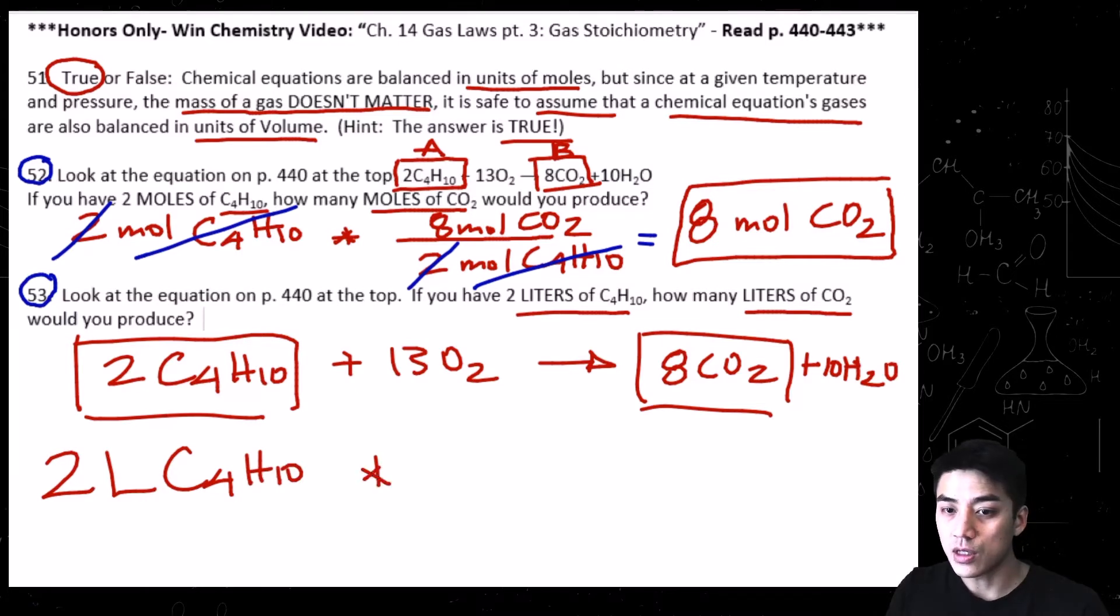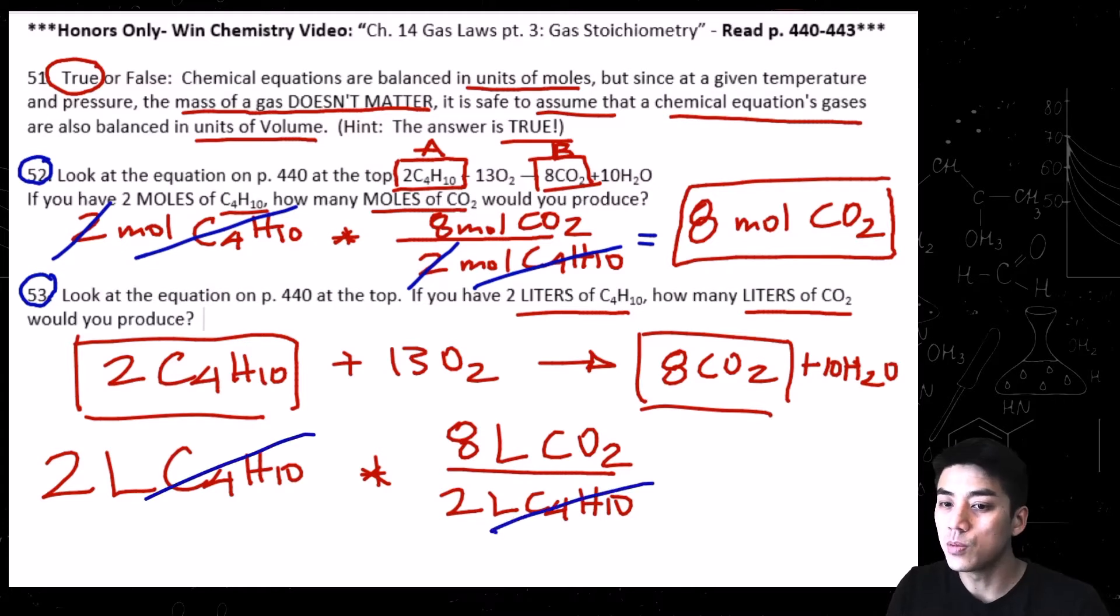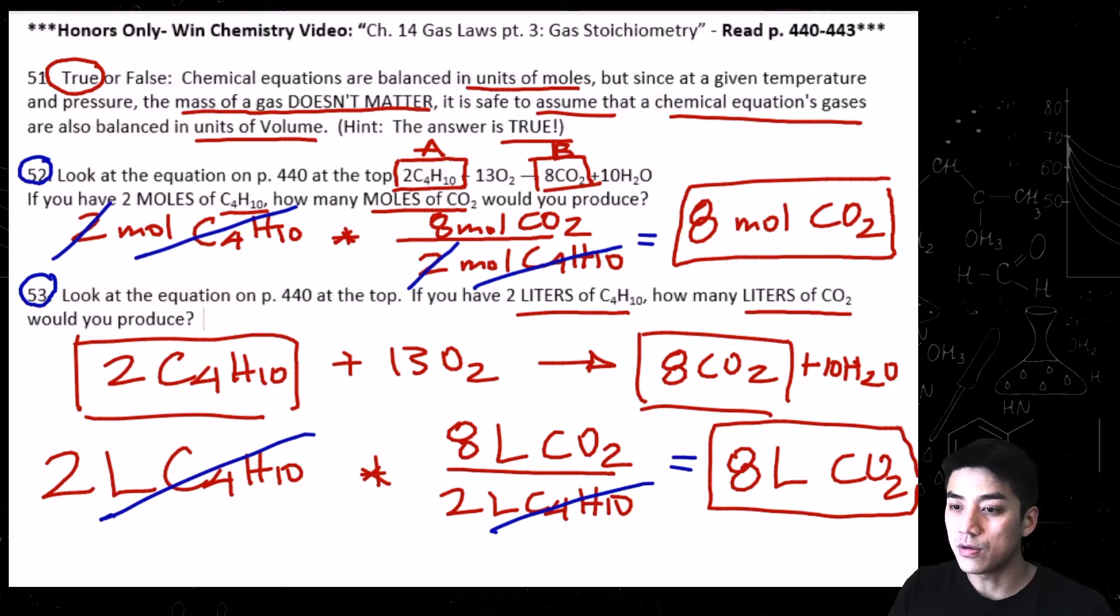And our work should be shown like this. So 2 liters of C4H10 times sign, draw a line. We're going to put 2 liters of C4H10 on the bottom, and then cut and paste the 8 liters. Instead of writing moles, you just write liters. That's really all there is to this trick.